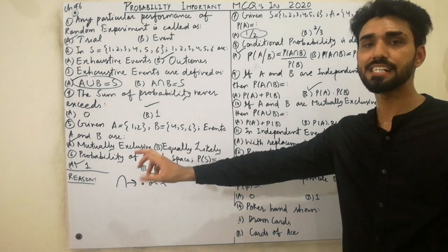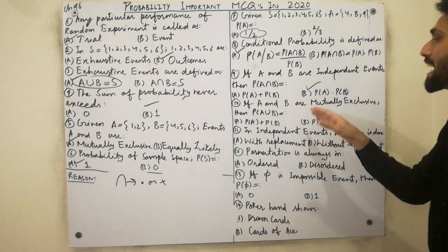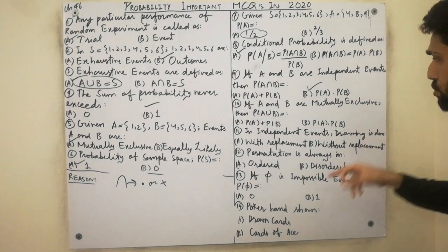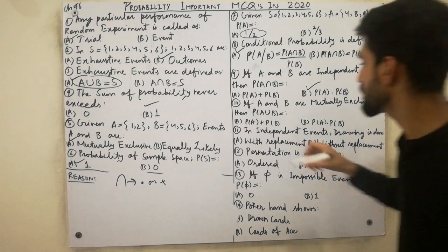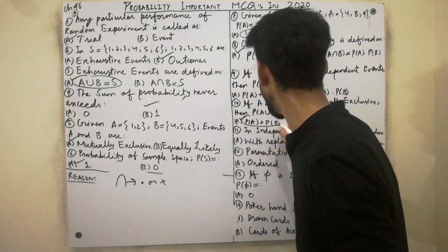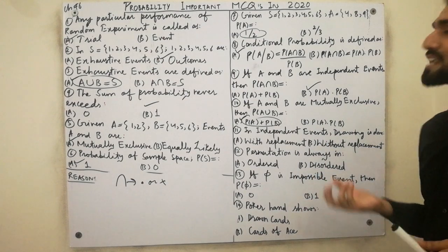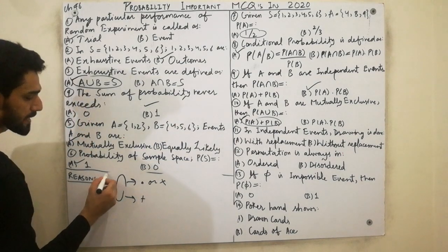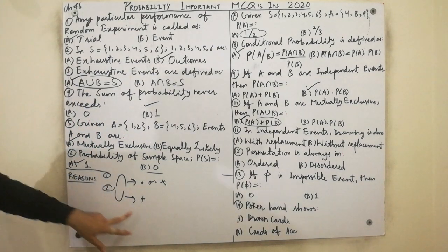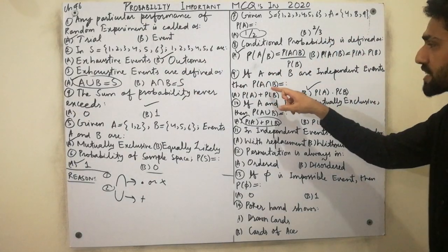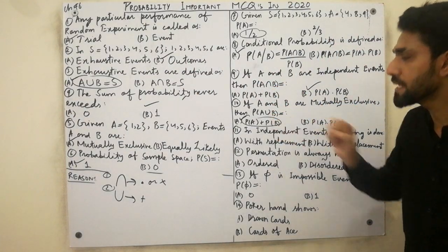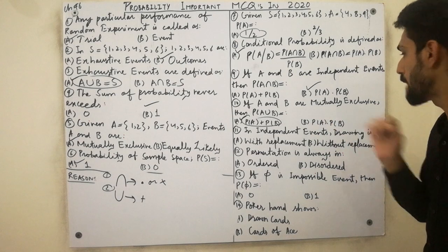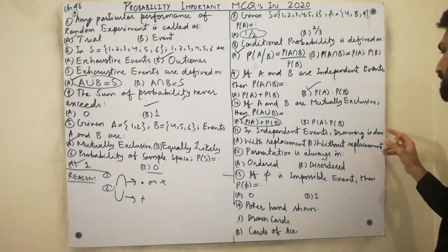MCQ ten: if A and B are mutually exclusive — meaning they have no common point — then P(A union B) = P(A) + P(B). Must remember: union means plus, and intersection means product (multiply). So when you see union, use addition. P(A union B) = P(A) + P(B) for mutually exclusive events.